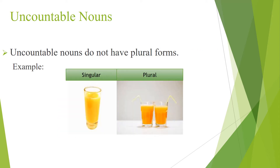Uncountable nouns do not have plural forms. For example, juice — juice. Sugar — sugar.